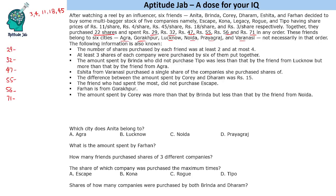We are given that the number of shares purchased by each friend was at least two and at most four — so maximum four shares and minimum two shares per friend. Also, at least three shares of each company were purchased by the six friends put together.